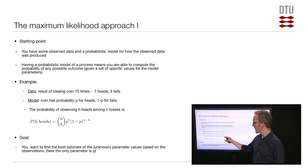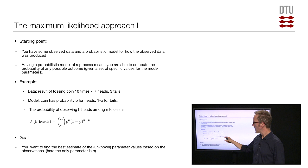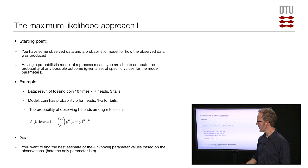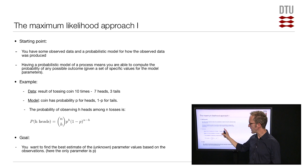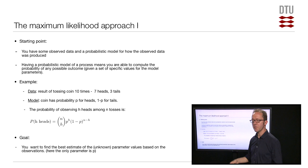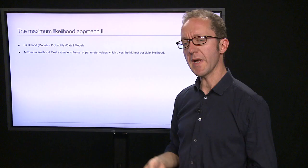So we have some data, we have a model, and we have a formula allowing us to compute the probability of any possible dataset for any given parameter value p. The goal in maximum likelihood analysis is, based on our data, to find the best estimate of the unknown parameter. We don't know p; we make an experiment to estimate it, and we use this formula to find a good estimate of the parameter value.